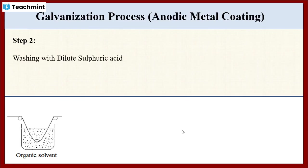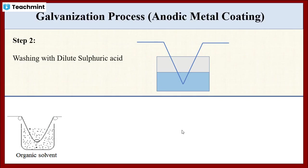In the second step, the metal steel is washed with dilute sulfuric acid at 60 to 90 degrees Celsius. When we wash the metal steel with dilute sulfuric acid, it removes the oxide scale — that is, any oxide content present on the surface of the metal.